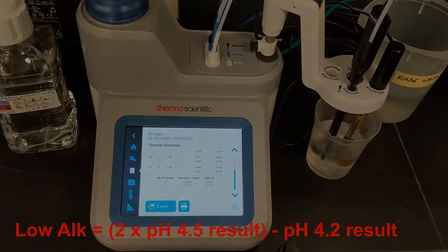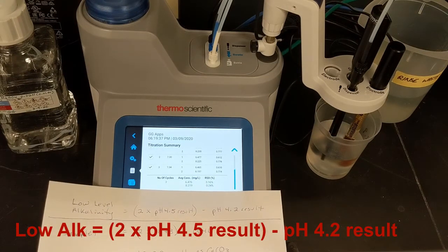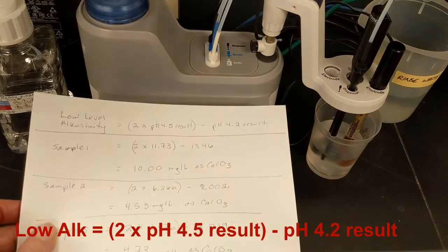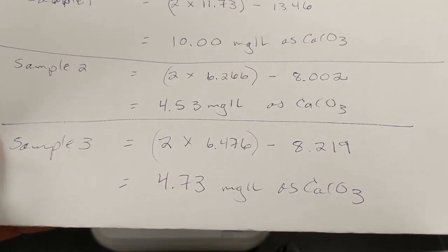From the average results, I can calculate the low-level alkalinity as 2 times the pH 4.5 result minus the pH 4.2 result, which is 4.73 mg per liter as calcium carbonate.